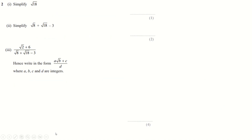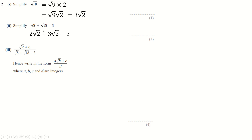We're doing more of that here — root 18 is 9 times 2, so that's root 9 times root 2, root 9 is 3, so that's 3 root 2. And you can do the same thing here to say root 8 is 4 times 2, so it's root 4 times root 2 — root 4 is 2, so that's 2 root 2. Root 8 is 2 root 2, just write it straight down. These two things come together for 5 root 2, and then you just take away the 3, and that'll be the answer.